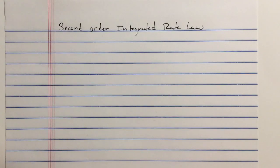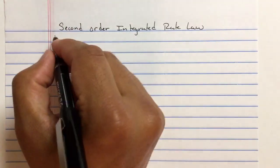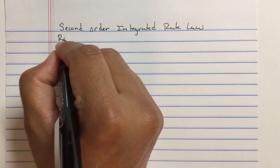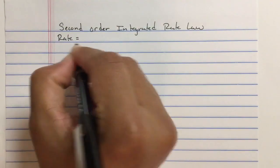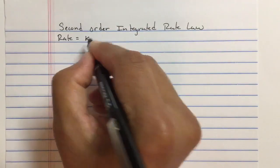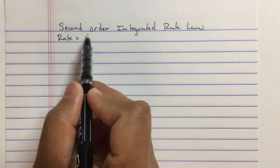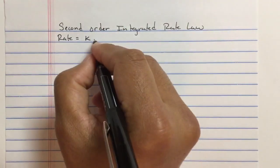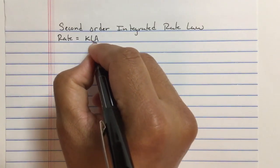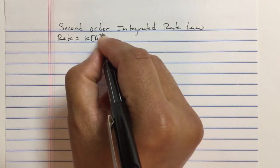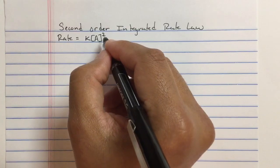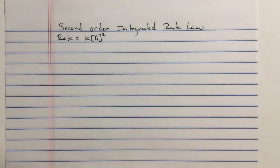In this video, let's go over the second order integrated rate law. Remember, the rate law—how the rate depends on the concentration—is equal to the rate constant times the reactant squared. That 2 is the second order. That's why we say this is a second order rate law.